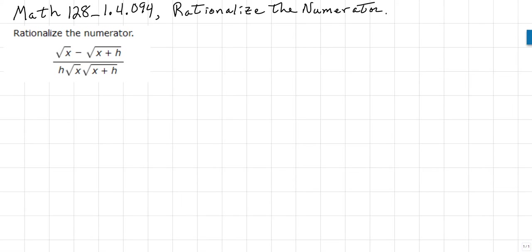Rationalize the numerator. Given the following expression — the square root of x minus the square root of x plus h, all over h times the square root of x times the square root of x plus h — to rationalize the numerator,